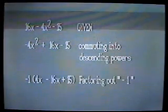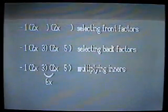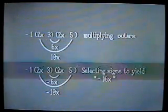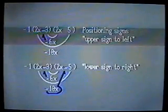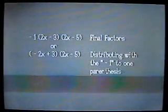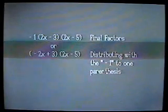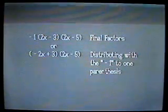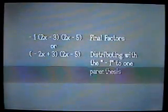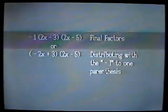The steps of the whole problem now look like this. Of course, the steps we did on the board are much less numerous than this. These graphics simply break down the thought process into tiny steps as one would do to write a computer program. Note that the minus one is distributed if you want that final form of the answer. The minus one is distributed to only one parenthesis since the distributive law involves only one parenthesis.